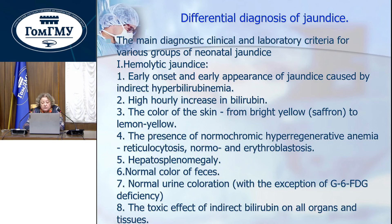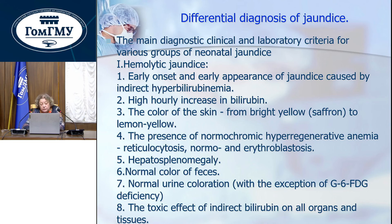Differential diagnosis of jaundice — the main clinical and laboratory criteria for various groups of neonatal jaundice. Hemolytic jaundice: early onset and early appearance of jaundice caused by indirect hyperbilirubinemia, rapid increase of bilirubin, skin color from bright yellow to lemon-yellow, presence of normochromic hyperbilirubinemia, regenerative anemia, reticulocytosis, normo- and erythroblastosis, hepatosplenomegaly, normal color of feces, normal urine coloration, and toxic effect of indirect bilirubin on organs and tissues.